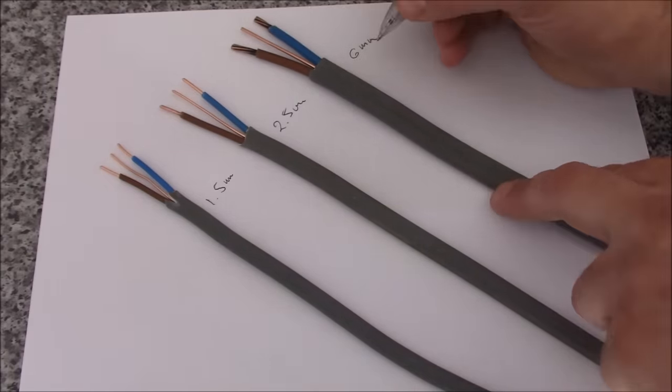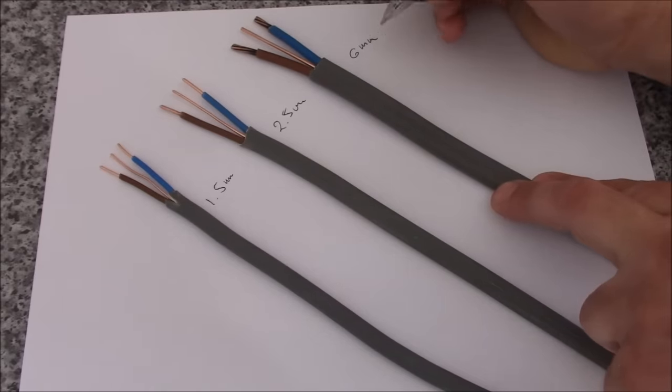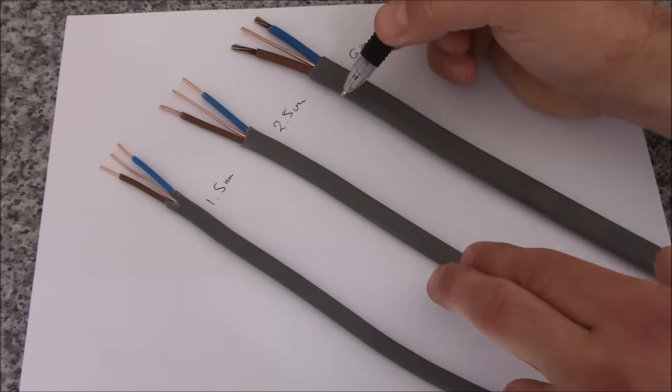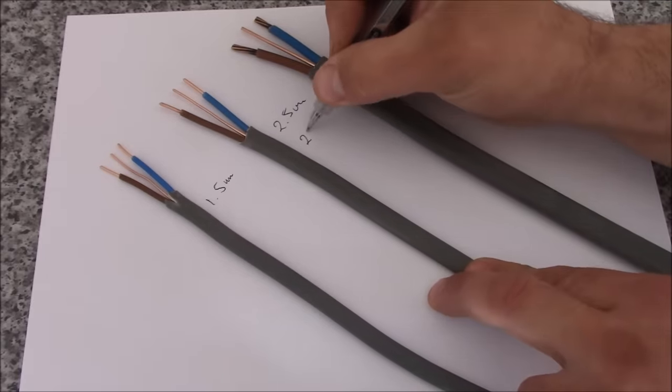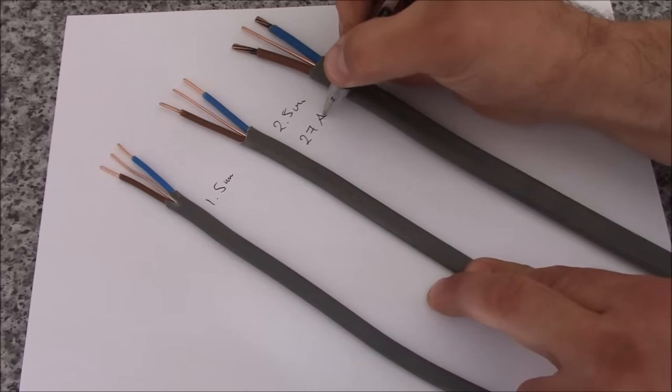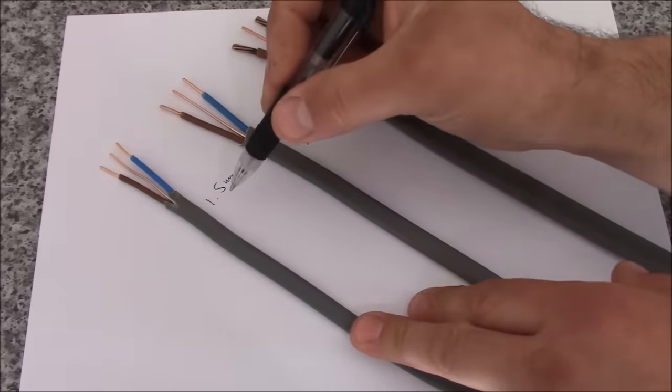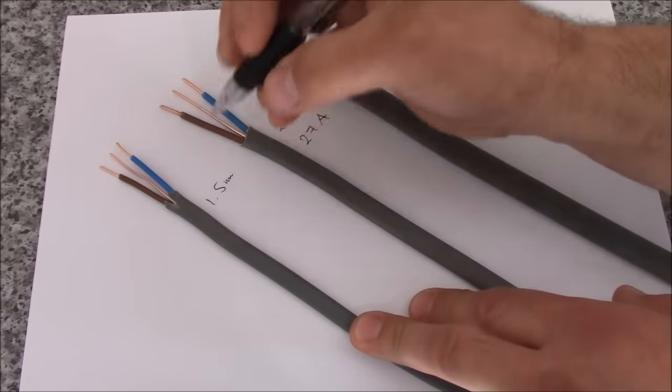And for example the thick one, the 6 mm cable, the current carrying capacity is 47 amps. We measure this in amps. The 2.5 is 27 amps. And the 1.5 is 20 amps.